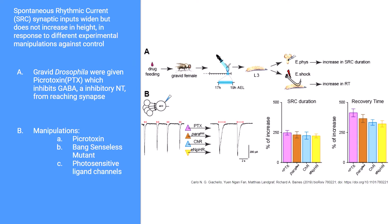What you see here is just one graph from Dr. Baines and Dr. Landgraf's research, which we use to model our experiments after. In part A, the diagram shows picrotoxin, which is a neurotoxin fed to the pregnant Drosophila. This causes their offspring to be permanently affected by this picrotoxin. Picrotoxin inhibits GABA, which is an inhibitory neurotransmitter, causing the motor neuron to become overly excited, which causes seizures inside the larvae.